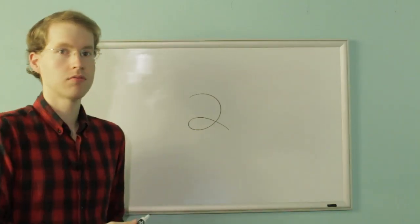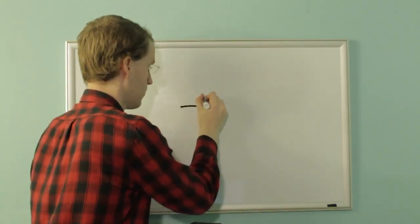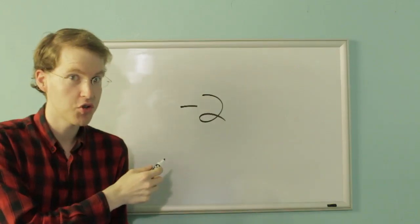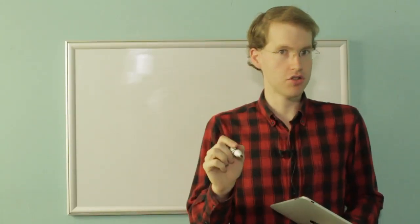2, integer. Negative 2, integer. Any whole number, negative or positive, and zero, are all integers.